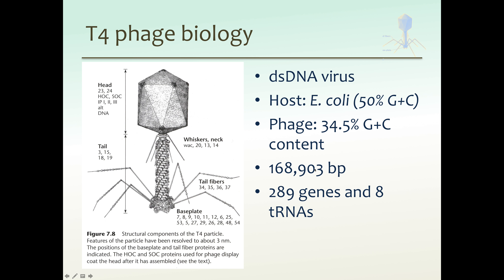This virus has a huge genome, much larger than the genomes that we're looking at in class, which range from about 15,000 base pairs to about 78,000 base pairs. It has 289 genes and 8 tRNAs. Imagine trying to annotate this huge genome — it would take the entire class to do this one genome.